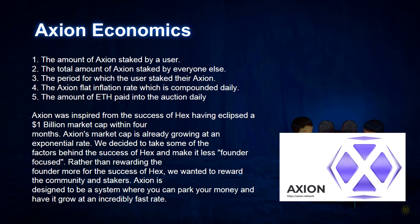Axion Economics. Axion generates interest through the idea of inflation. The Axion smart contract pays out Axion on 5 basic principles: 1. The amount of Axion staked by a user. 2. The total amount of Axion staked by everyone else. 3. The period for which the user staked their Axion. 4. The Axion flat inflation rate, which is compounded daily. 5. The amount of ETH paid into the auction daily.